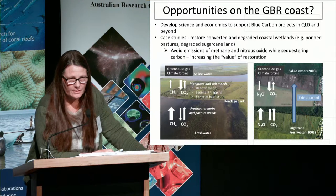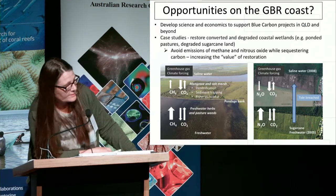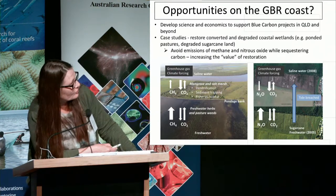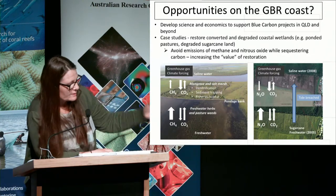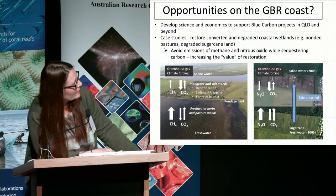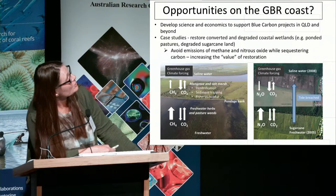Turning back these kinds of land uses to saline wetlands can help us, because it allows fish to traverse the fresh-to-salty boundary and also reduces methane emissions.